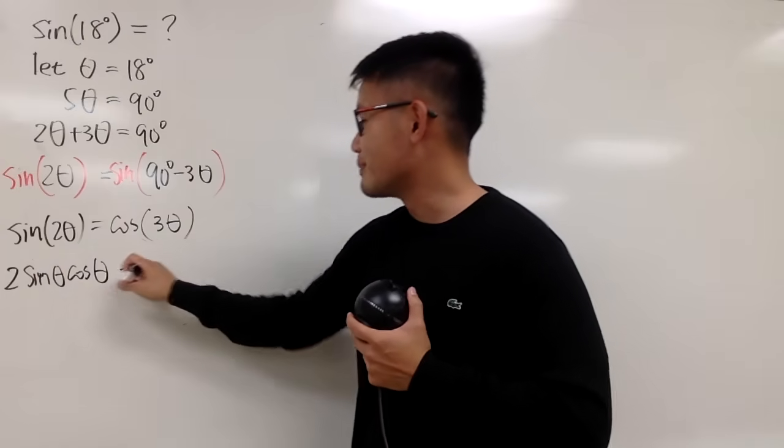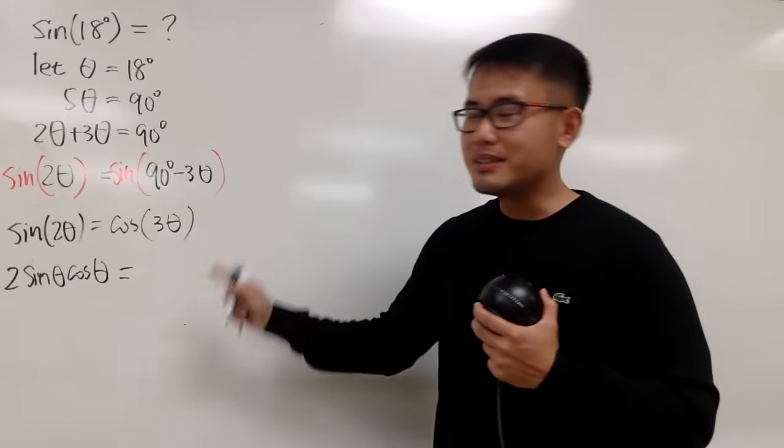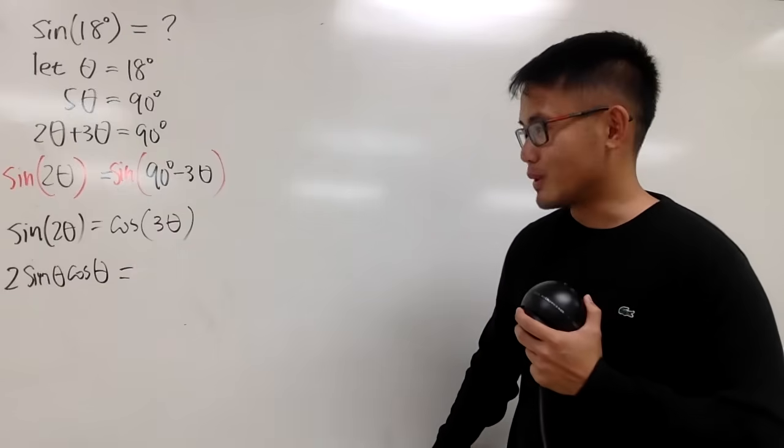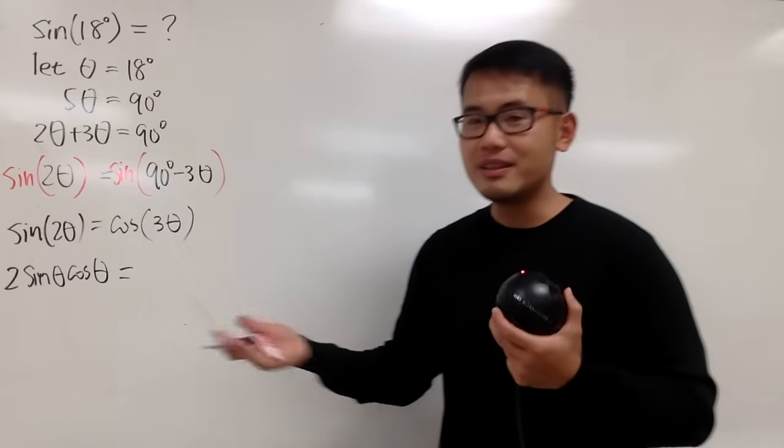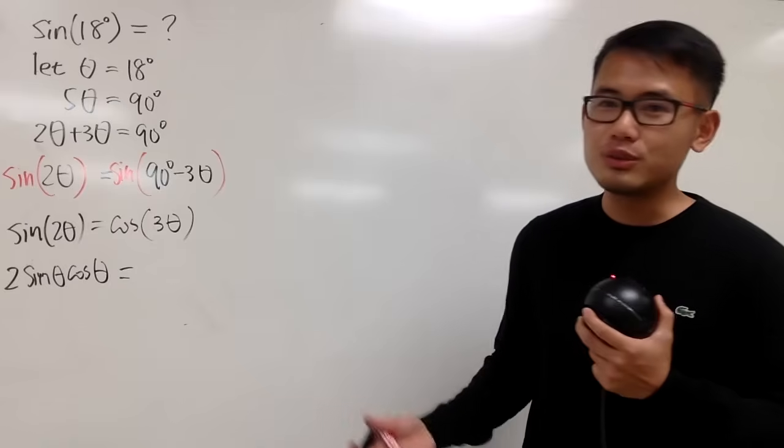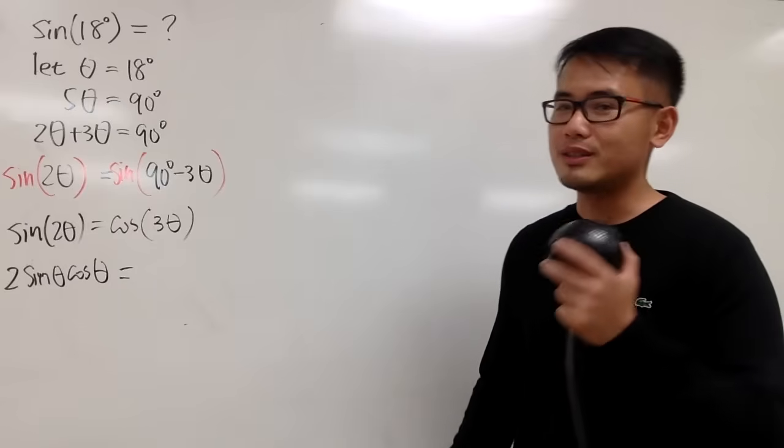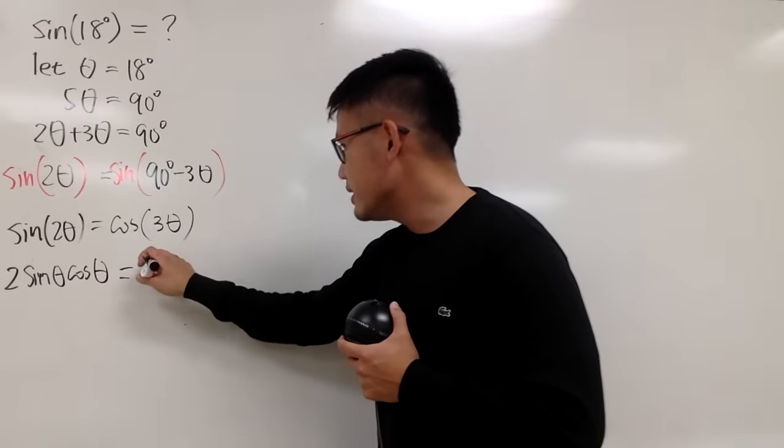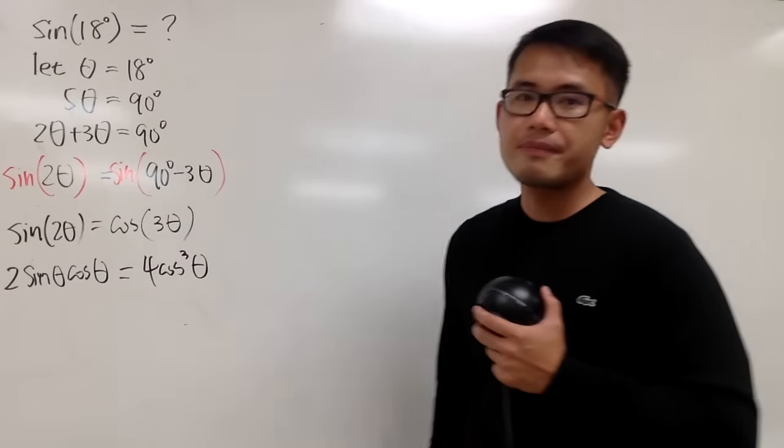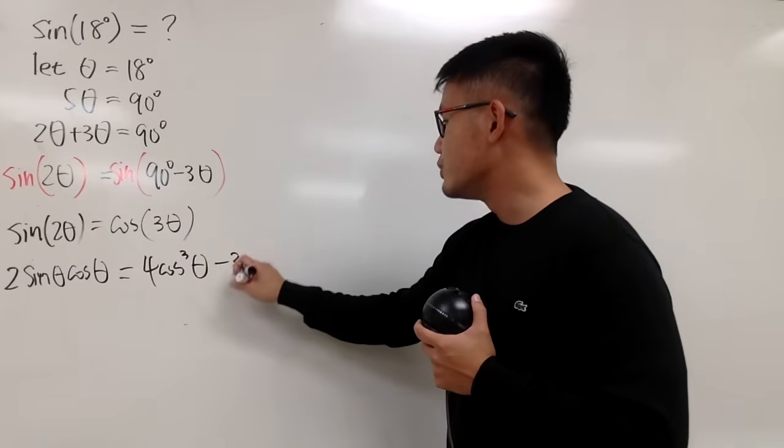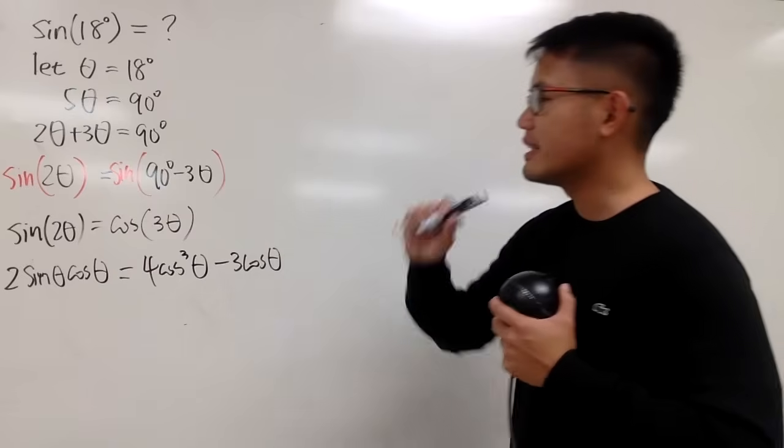On the right-hand side, we have the triple angle identity for cosine. And if you haven't seen how we can come with this formula or identity, you can check out the videos. I will have the links to the videos in the description for you. Anyway, this is equal to 4 cosine to the third power theta, and then minus 3 cosine theta.